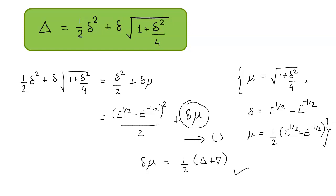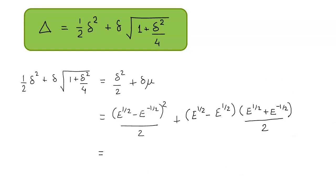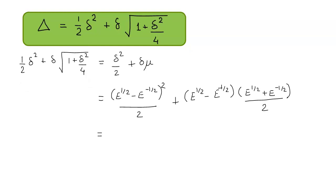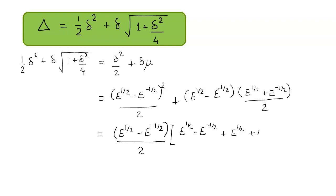Let us try to solve it in the first form, that is converting it into shift operator form. This gives the value of delta mu as e raised to power 1/2 minus e raised to power minus 1/2 into e raised to power 1/2 plus e raised to power minus 1/2 upon 2. Taking the common term, what remains inside is e raised to power 1/2 minus e raised to power minus 1/2 plus e raised to power 1/2 plus e raised to power minus 1/2. So some terms get cancelled.